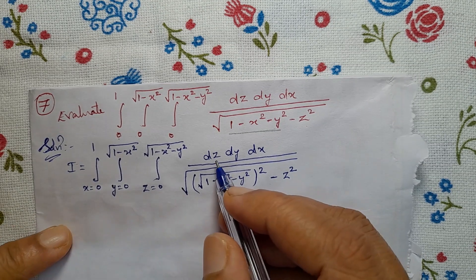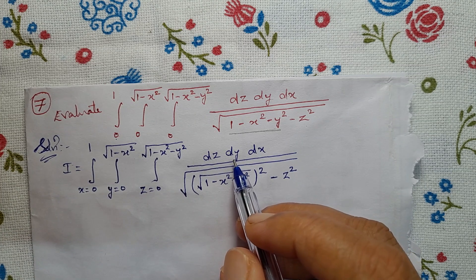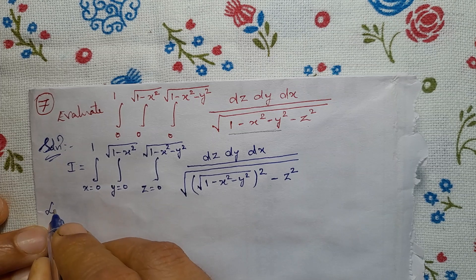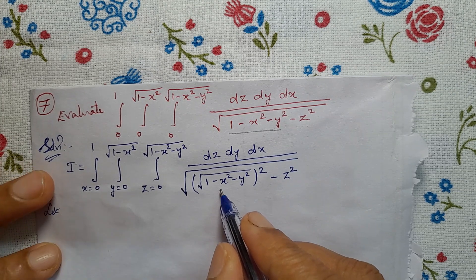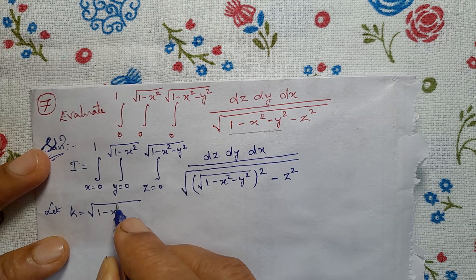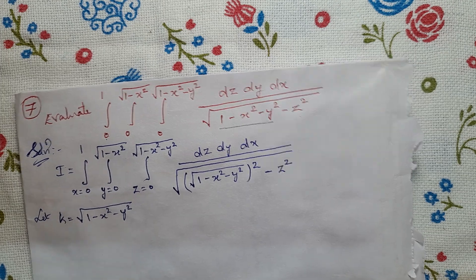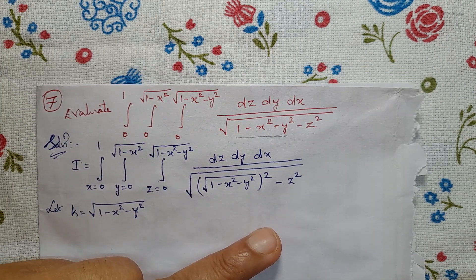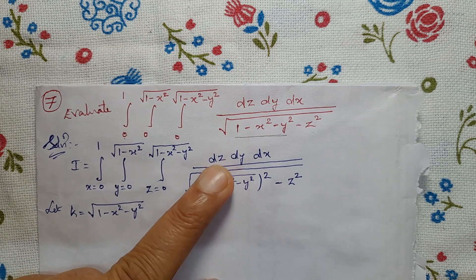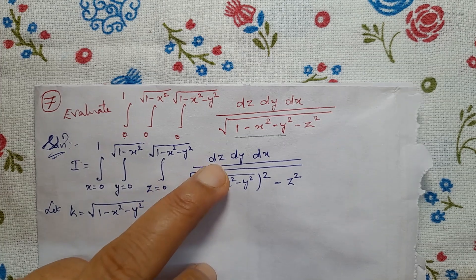We shall first integrate with respect to z, by treating x and y as constants. For convenient purpose, let k = √(1−x²−y²). We shall first integrate with respect to z, treating x and y as constants.